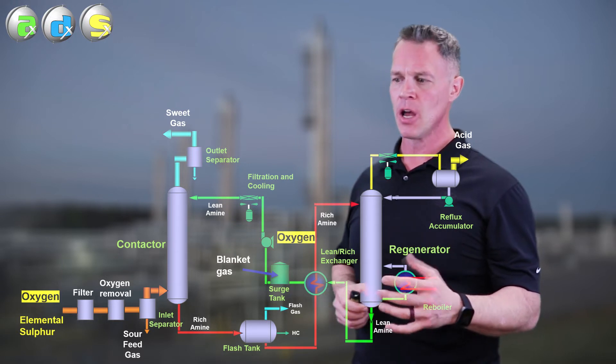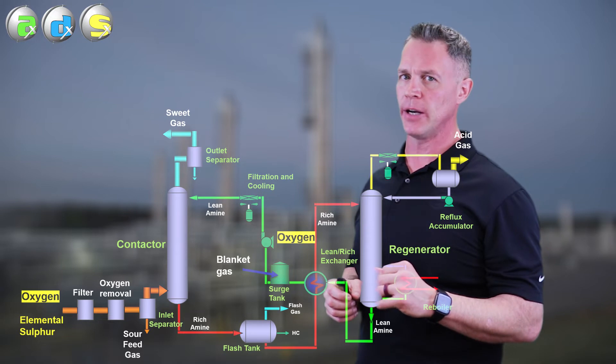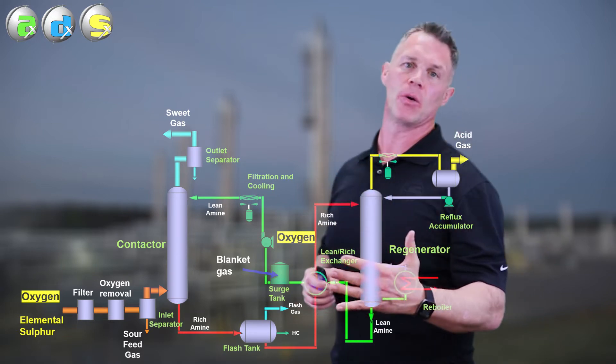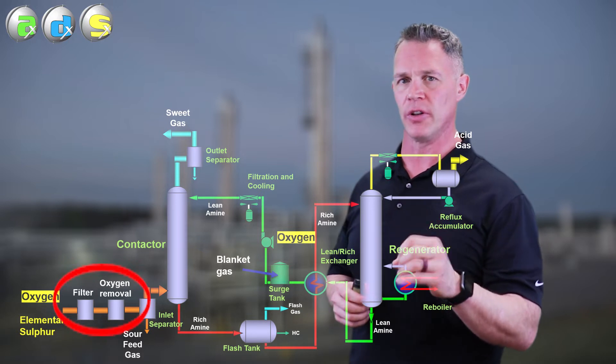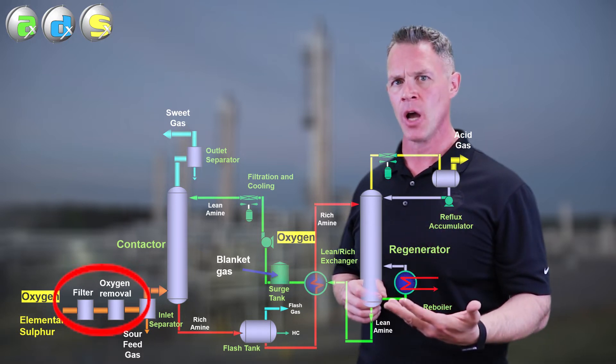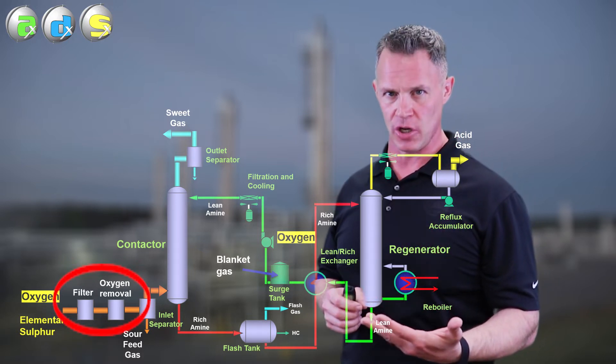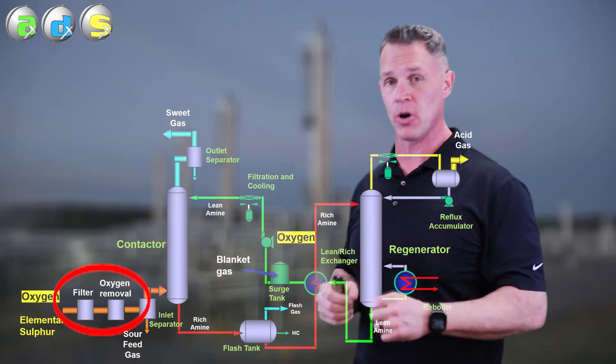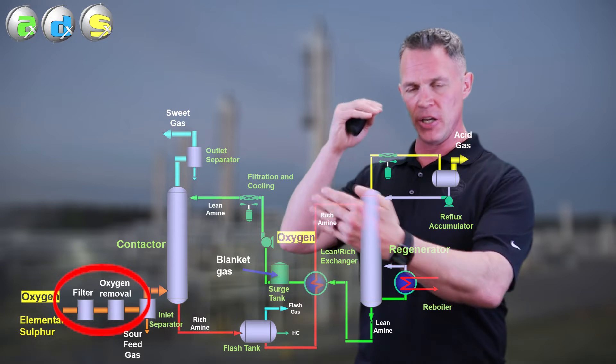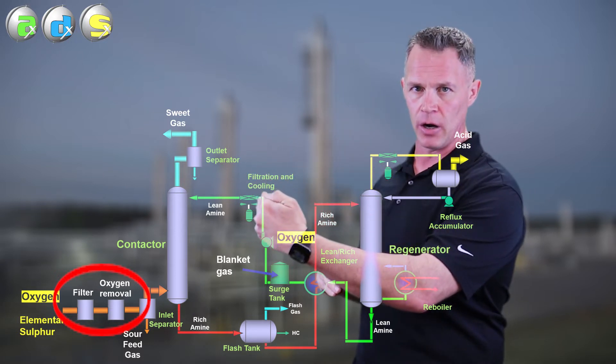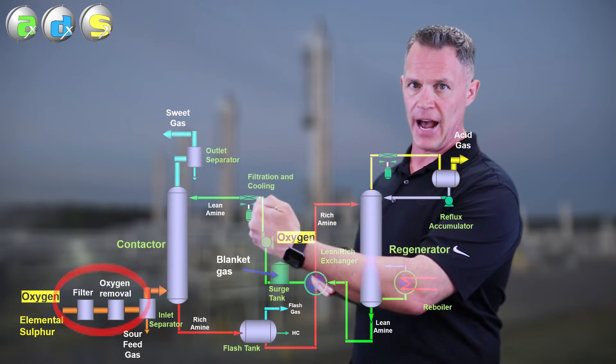There is a fair amount of technology that you can put in front of your inlet separator knockout dump for oxygen removal. There's catalytic reactors. Our friend Ken McIntosh of Trimeric did a really good paper at the Lawrence Reed Conference a couple years ago. He spells out all the different technologies that are out there for oxygen removal from gas.